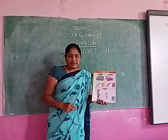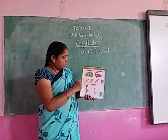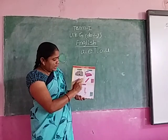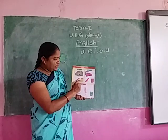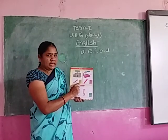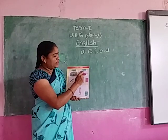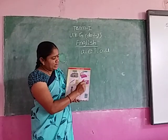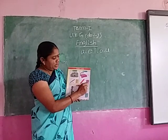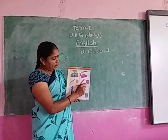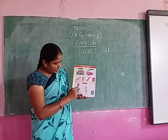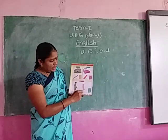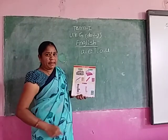Next, vowel E letter words. EN words: D-E-N den, P-E-N pen, M-E-N men, H-E-N hen, T-E-N ten. ED words: B-E-D bed, R-E-D red, L-E-D led, W-E-D wed. Next, EG words: B-E-G beg, L-E-G leg, P-E-G peg.